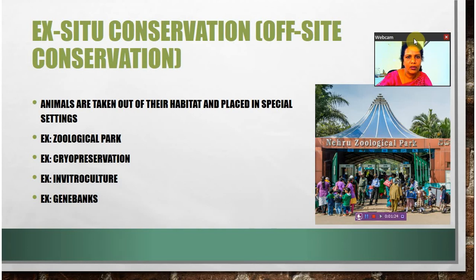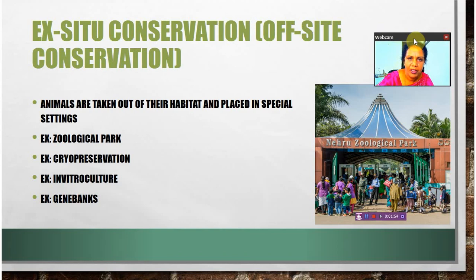Cryopreservation is an ex situ conservation method. Another method is in vitro culture, which means culturing in laboratories — fertilization and growing in test tubes. Another method is gene banks, which are banks where genes of species are saved and protected, because they belong to endangered species.